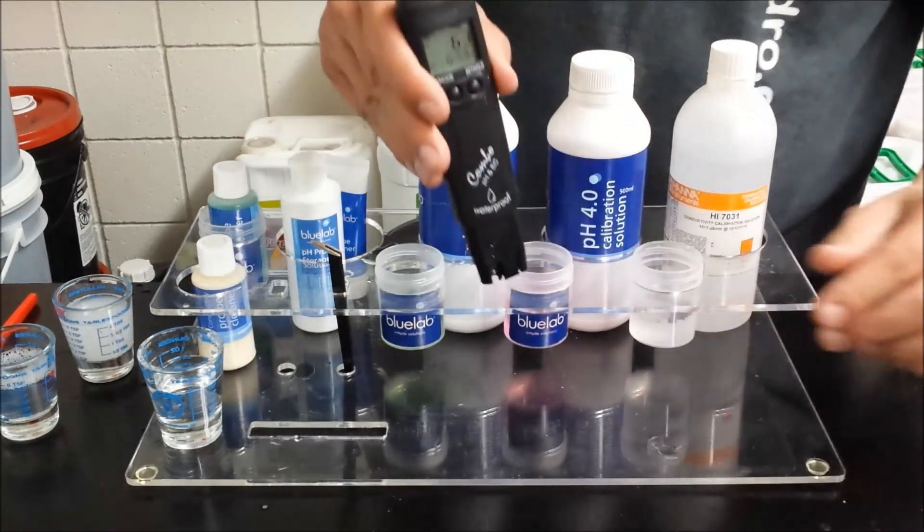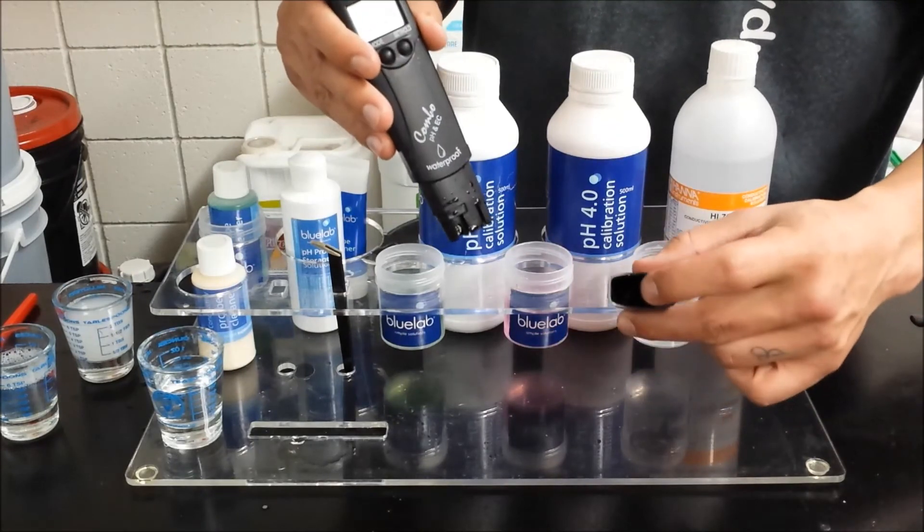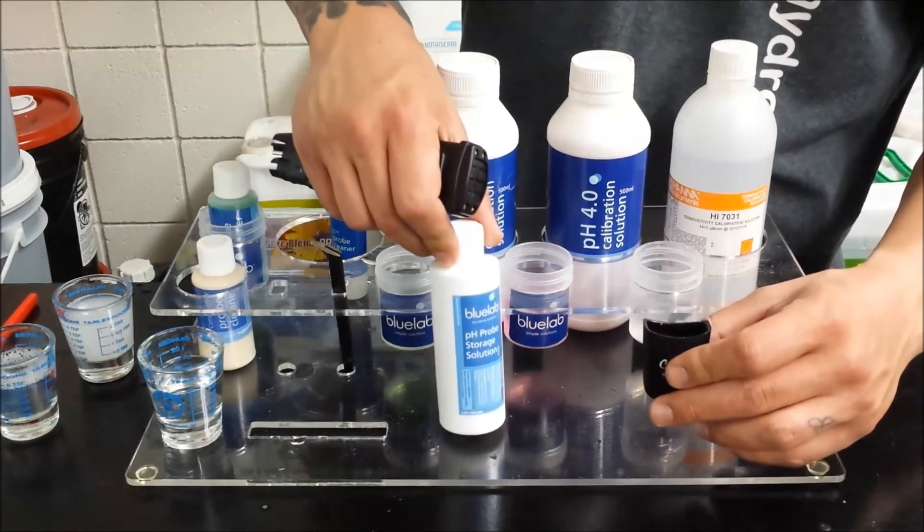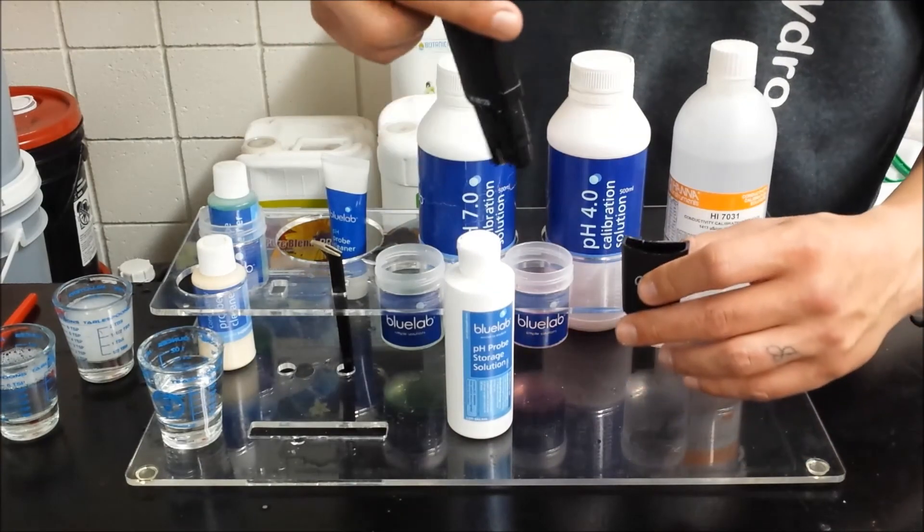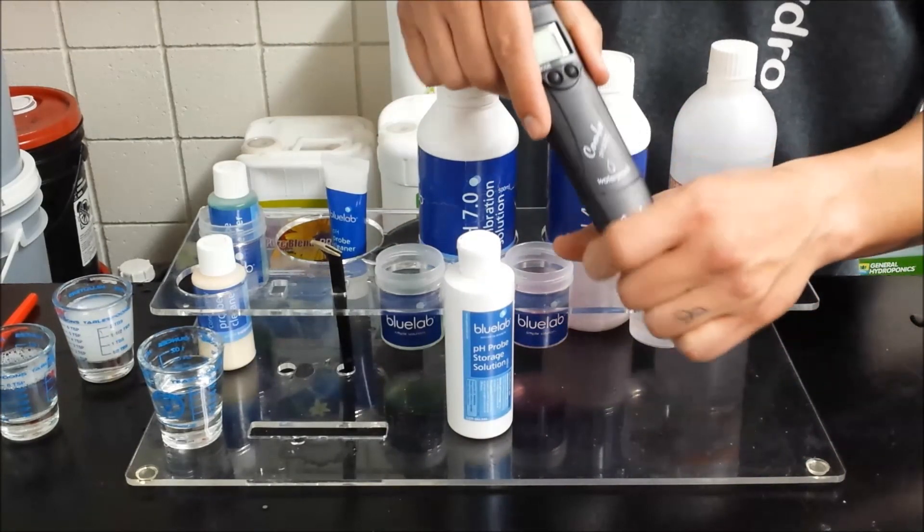And the last thing you want to do before putting this away when you're done is add some storage solution to the little reservoir inside the cap. You want to add some kind of storage solution to that to keep the pH probe from drying. And you're ready to go.